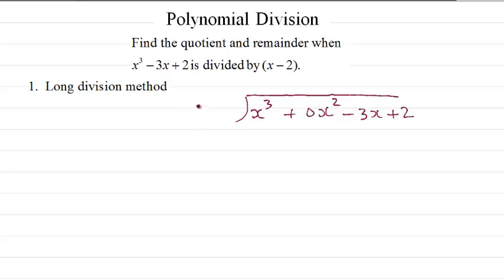And divided by x minus 2. First we're going to eliminate x cubed, so we need to multiply this x by x squared. We write it there. So x squared times x is x cubed. Minus 2 times x squared is minus 2x squared.